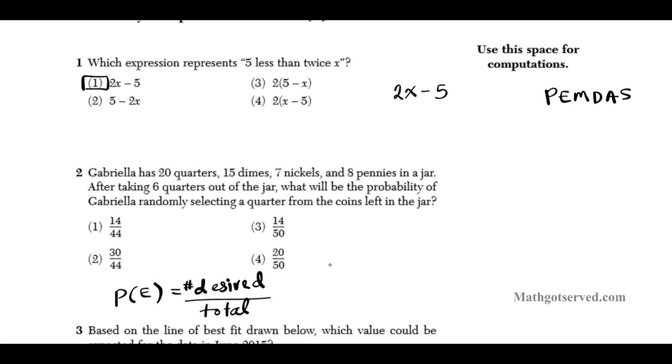That's the formula for probability. So these are the total number of coins that we have. Let's do a real quick accounting right here. For quarters, we have 20. For dimes, D, we have 15. For nickels, we have 7. And then for pennies, we have 8. If we add this all together, 20 plus 15 is 35, and then 7 plus 8 is 15. And if you add everything, you get 50. So this is the total number.